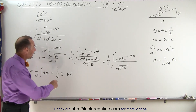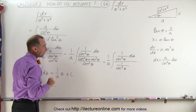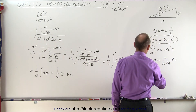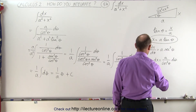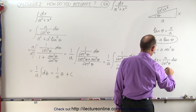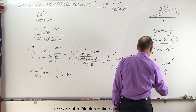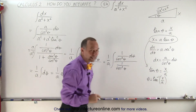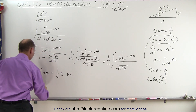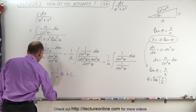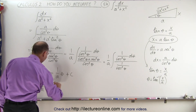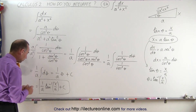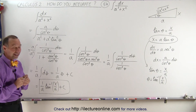Now, we typically don't leave it like that, because our original integral had the variable x. So we go back and we have the relationship between theta and x. We can say that the tangent of theta is equal to x over a, which means that theta is equal to the inverse tangent of x over a. We substitute that back in, and this becomes equal to 1 over a times the inverse tangent of x over a, plus a constant of integration. And that will be the result of that particular integral. And that's how it's done.